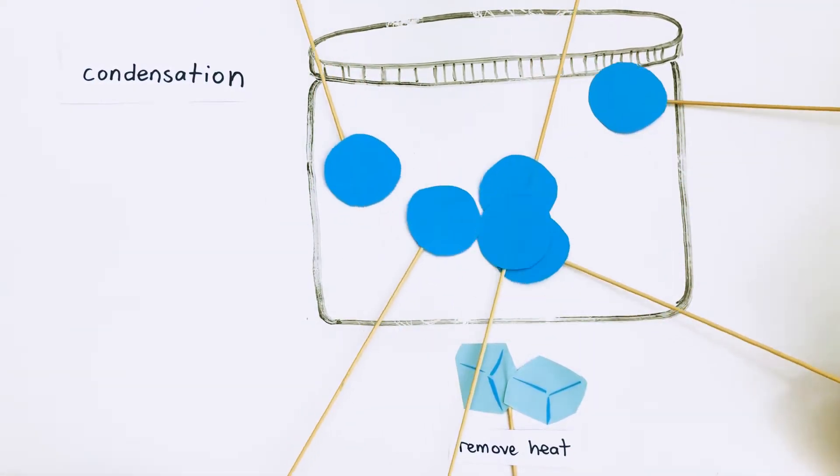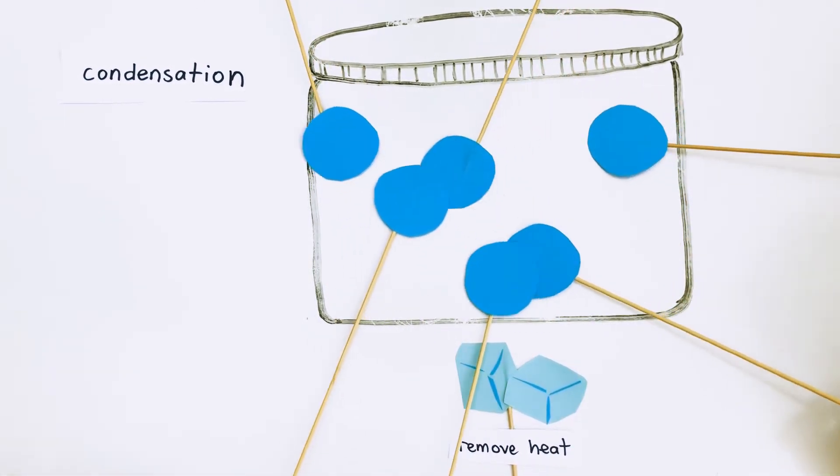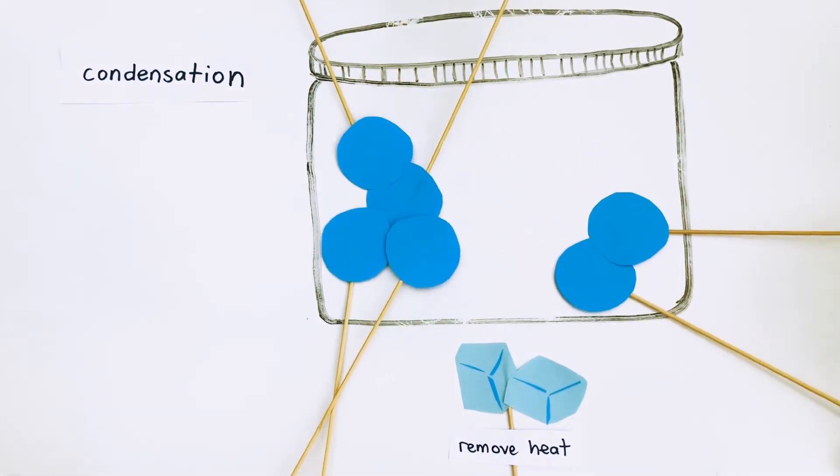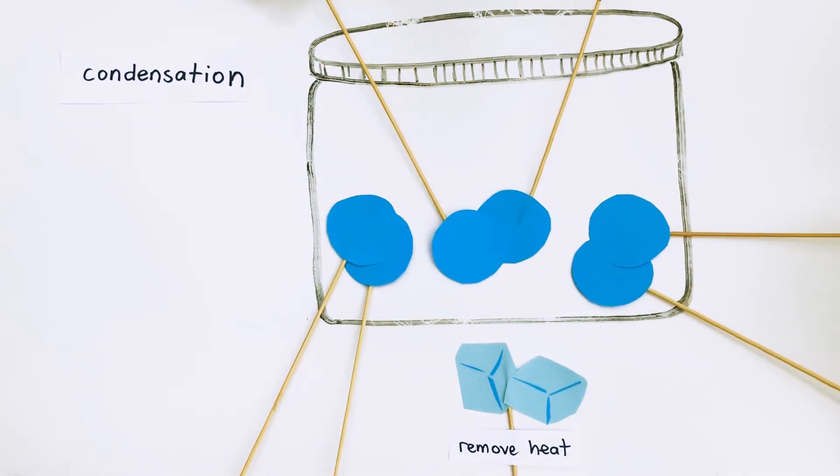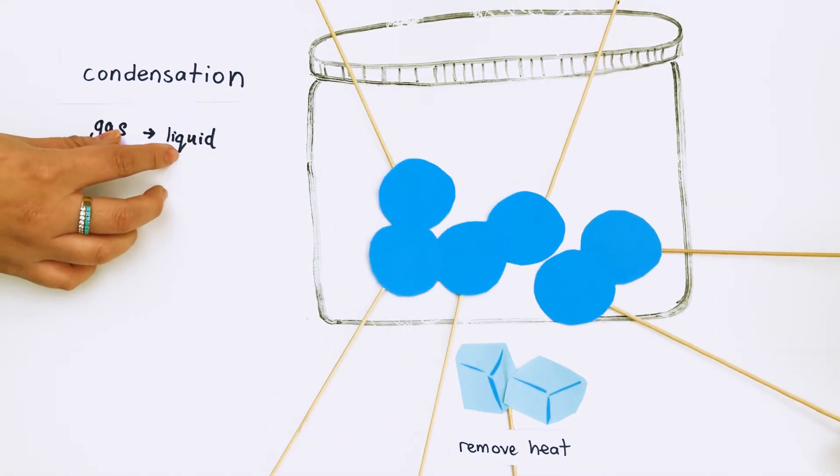Condensation happens because particles in the gas slow down. Eventually the particles bump into each other and stick together because they are attracted. Their slow movement is not strong enough to break them apart again. The gas has turned into a liquid.